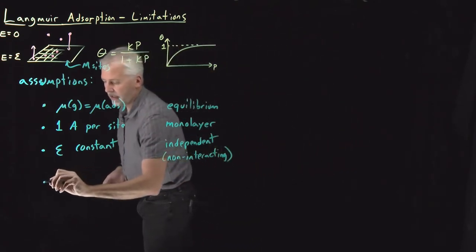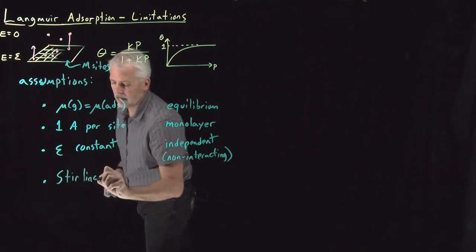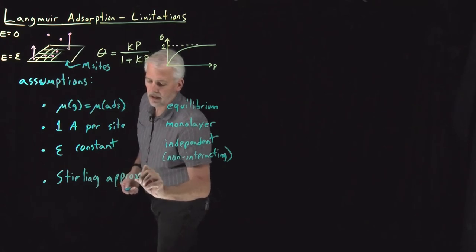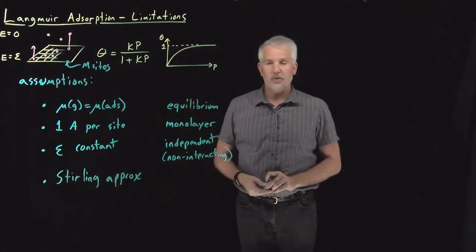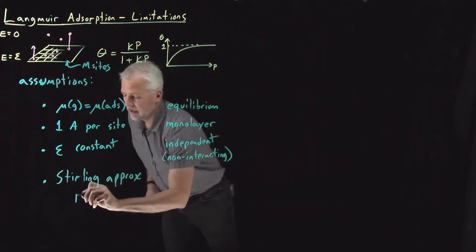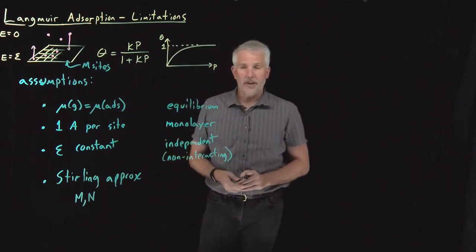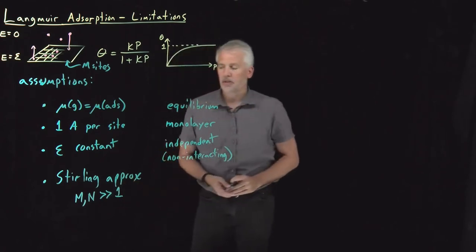And lastly, one of the assumptions that we made in doing the math that led to this Langmuir isotherm is we used the Sterling approximation. We assumed and we expanded the log of m factorial, log of n factorial, both using the Sterling approximation.